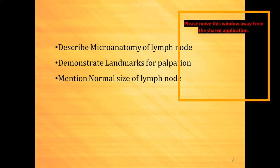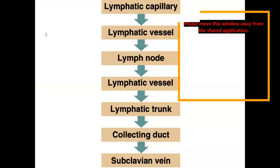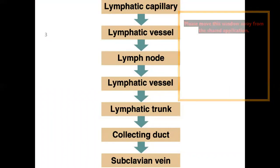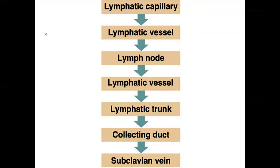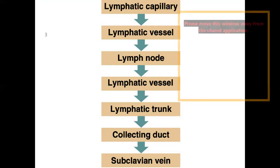The lymphatic drainage of the lower limb plays a very important role clinically. This is the general anatomy of the lymphatic system. The lymphatic capillaries drain into lymphatic vessels, then the lymph node, then the efferent vessels, the lymphatic trunk or collecting ducts, and finally drains into the left or right subclavian vein.